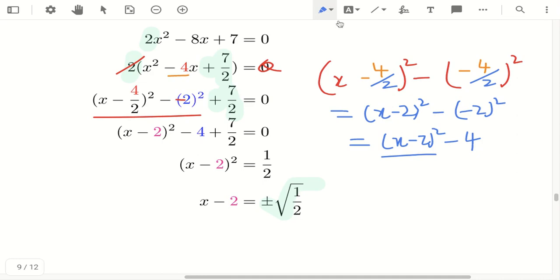So what you have left is this. Then, what I do next is that I'll take minus 4 plus 7 over 2, I bring it to the right-hand side, so I get half.